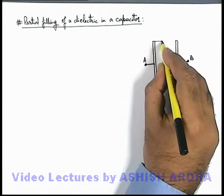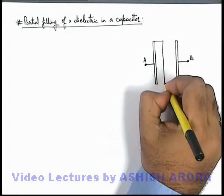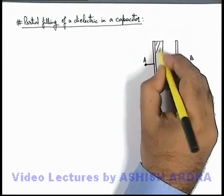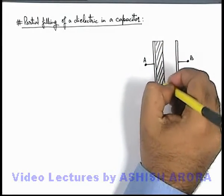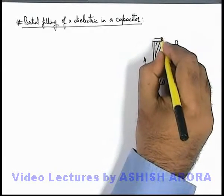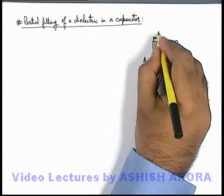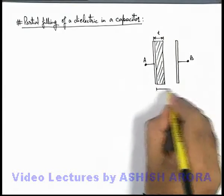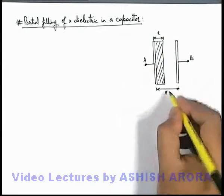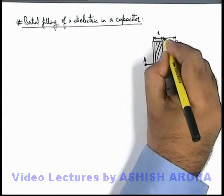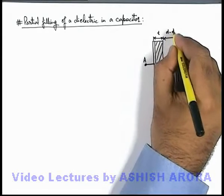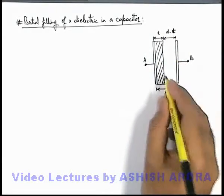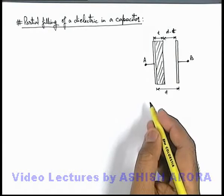Now say if we consider a situation in which we fill partly the space between the plates with the help of a dielectric like this. Here the dielectric thickness is t, and the total plate separation is d. Then in this situation we can say that a distance d minus t is filled with air. It is not filled with dielectric or it is the free space region.